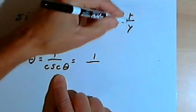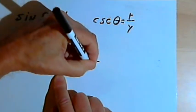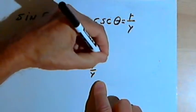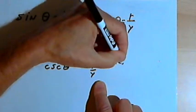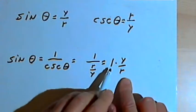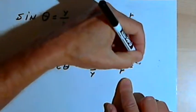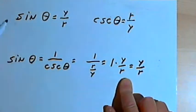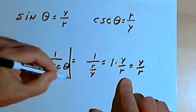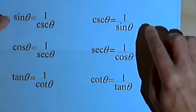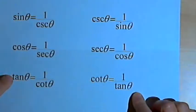The cosecant of theta is r over y, so this is going to be the same as 1 over r over y. When I divide a number by a fraction, I can turn it into a multiplication problem by flipping the fraction — taking the reciprocal. So I've now got 1 times y over r, and that just equals y over r. So I've got sine of theta equals y over r, which is a fact that I already know. So this identity is a true identity. Now we can do that same approach with the other five functions and get all six reciprocal identities.